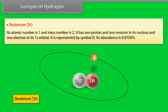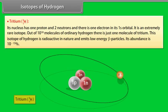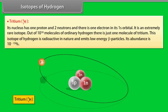Tritium: Its nucleus has one proton and two neutrons and there is one electron in its 1s orbital. It is an extremely rare isotope. Out of 10 to the power 18 molecules of ordinary hydrogen, there is just one molecule of tritium. This isotope of hydrogen is radioactive in nature and emits low-energy beta particles. Its abundance is 10 raised to the power minus 15%.